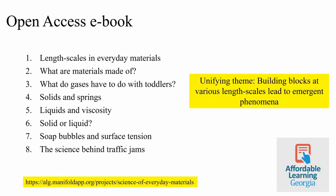We've also developed an open-access textbook as part of an Affordable Learning Georgia grant. This textbook contains eight chapters. The first few chapters are about traditional material properties and how they emerge from their underlying constituents. We discuss common everyday materials and how they can have a combination of liquid and solid properties. The underlying theme is how building blocks at various length scales can lead to emergent and predictable scientific phenomena.